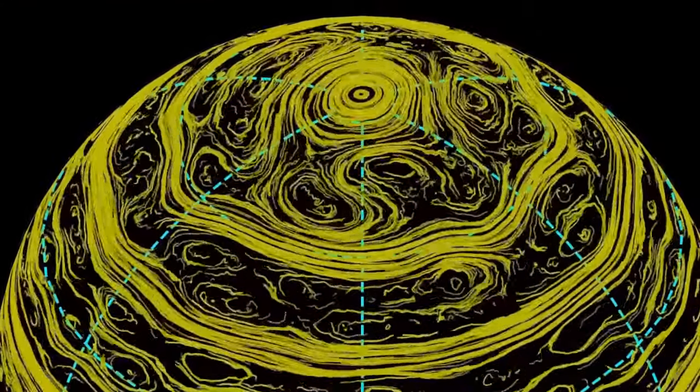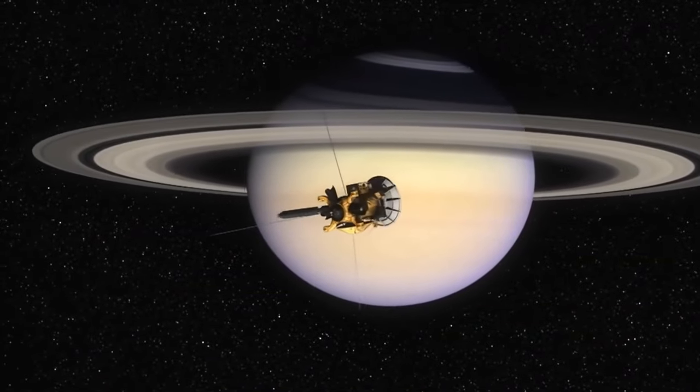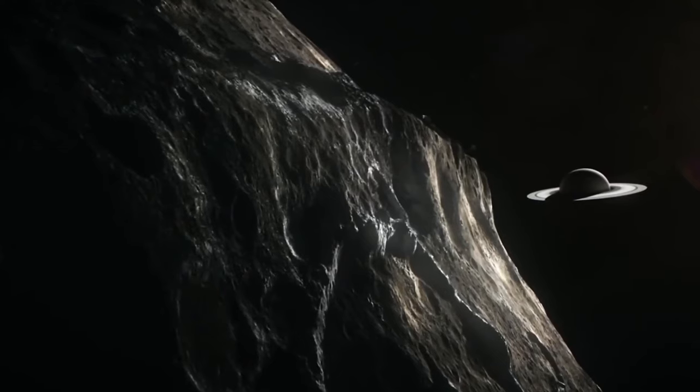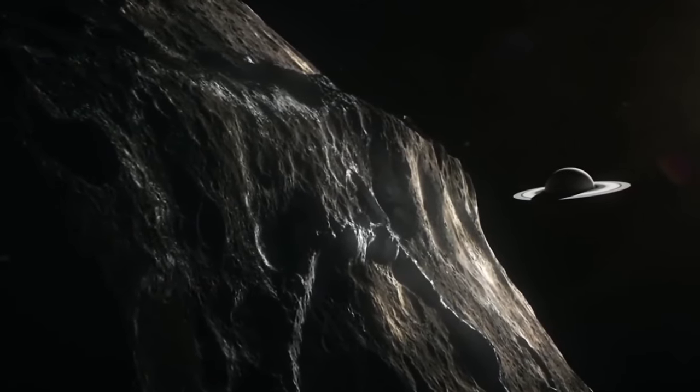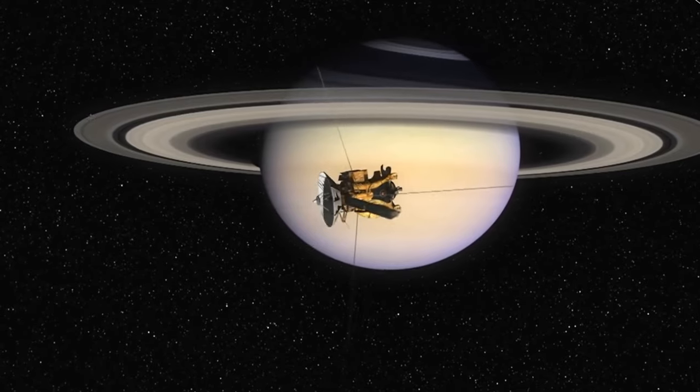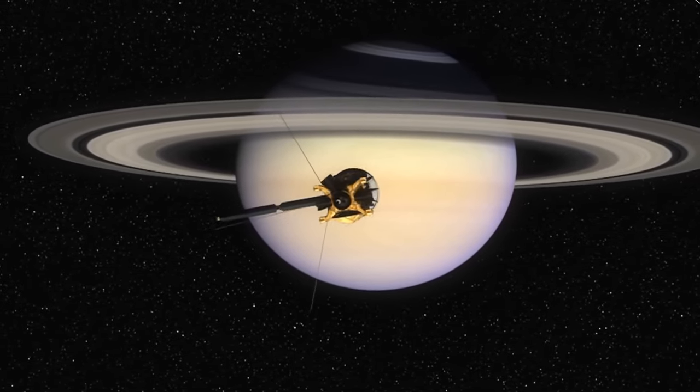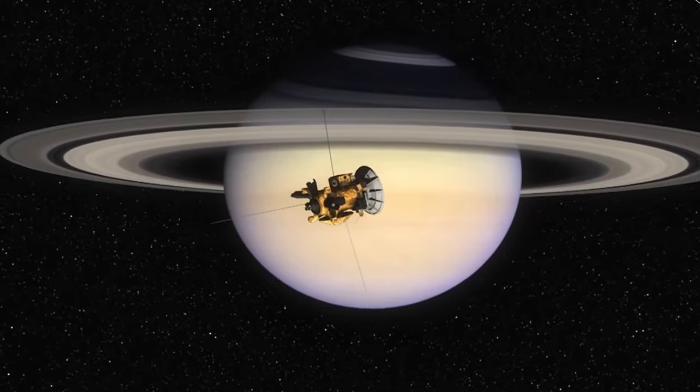Titan also has rivers, lakes, and seas on its surface. However, unlike our planet's water-filled bodies, Titan's liquid reservoirs are made up of methane and ethane. Methane is a compound associated with the metabolic processes of many organisms, serving as a source of energy.